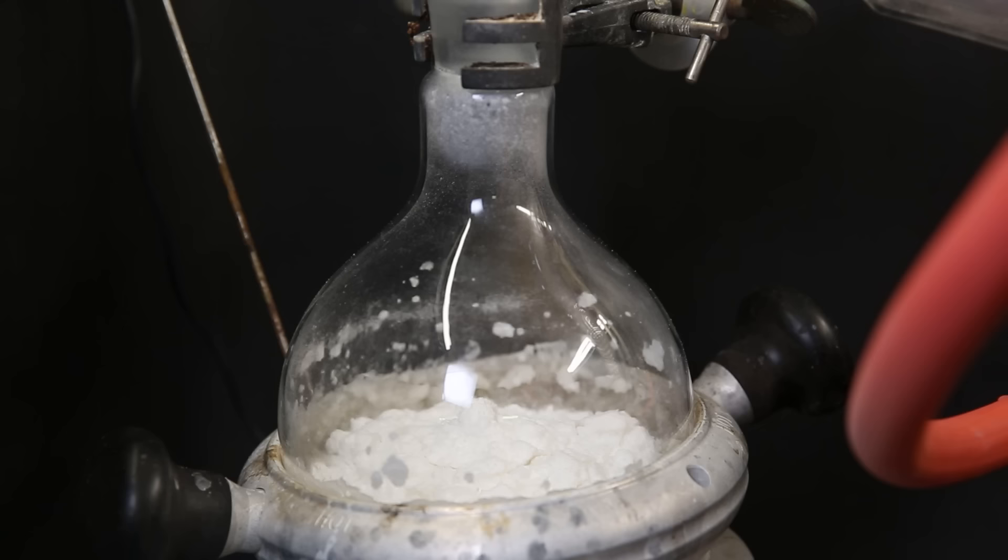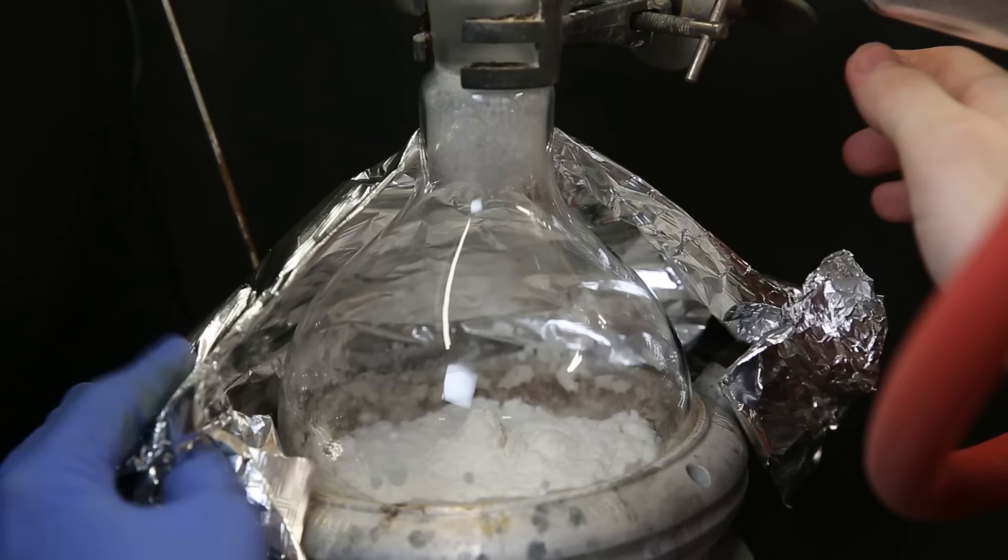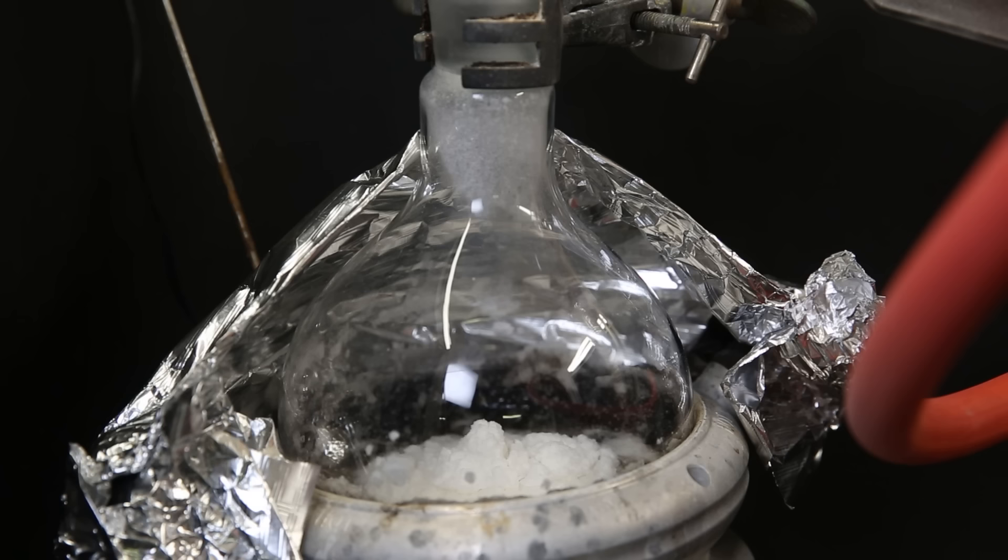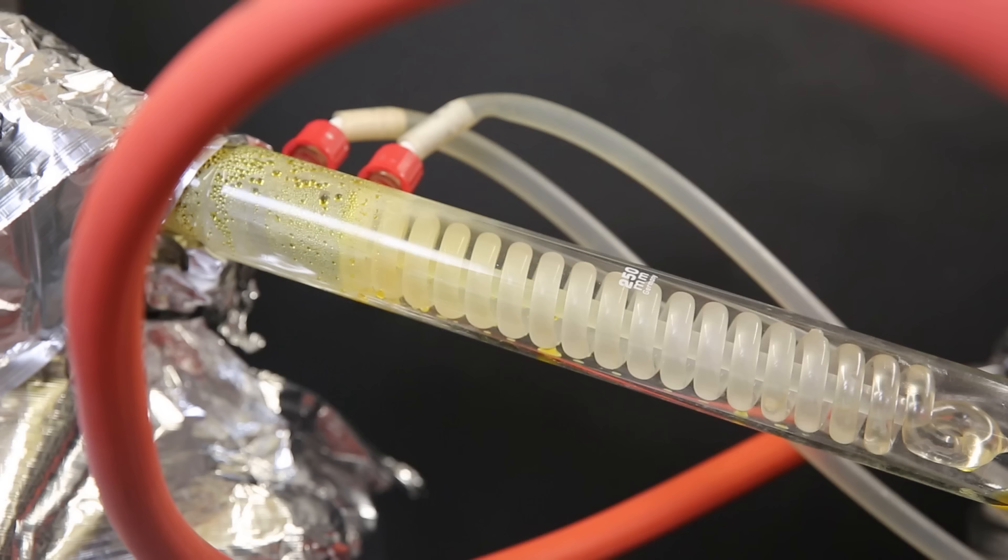Since the PEG 4000 will melt at a relatively low temperature, it will hopefully hold it all together. When the PEG begins to melt, I pull a vacuum and heat it to 190°C. At this point, the mixture begins to char and form mostly water, furfural and levoglucosanone. Yellow liquid starts coming over, and I leave it running until nothing more comes over.